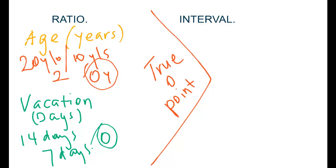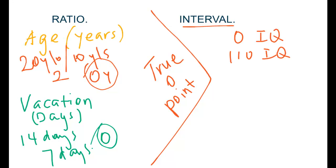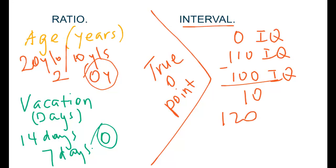Ratio has a true zero point; interval does not. Take IQ as an example. Although it is calculated in such a way that allows for a score of zero, that zero would not indicate a complete lack of intelligence because the person would have at least been able to take the test. Somebody who has 110 IQ still has 10 more than somebody who scores 100 — we can calculate that difference. However, we cannot say that somebody with 120 IQ is twice as intelligent as somebody with a score of 60, because there is no true zero point.